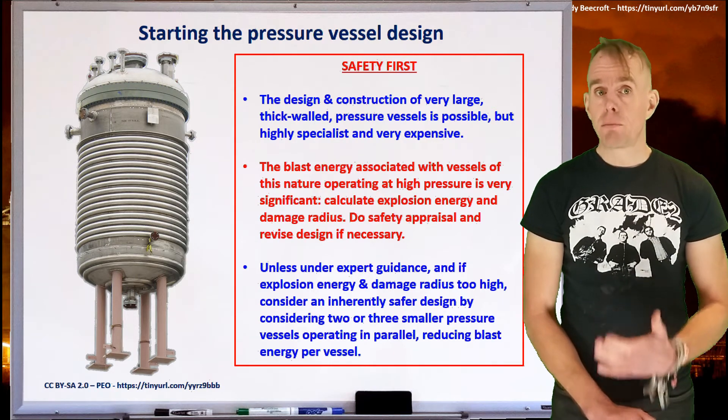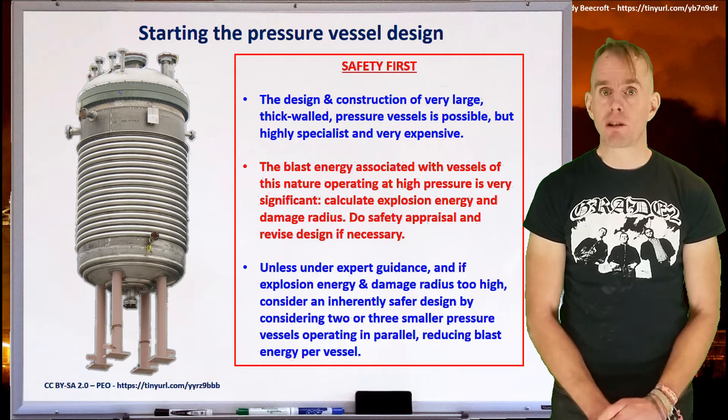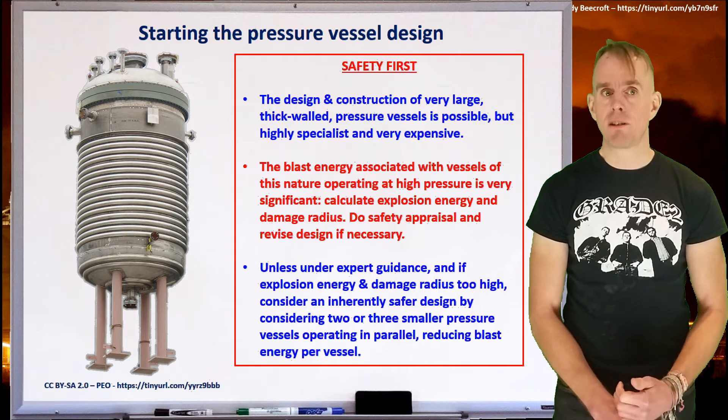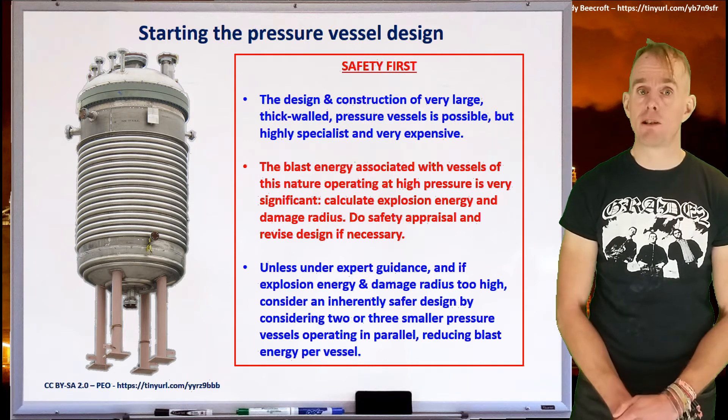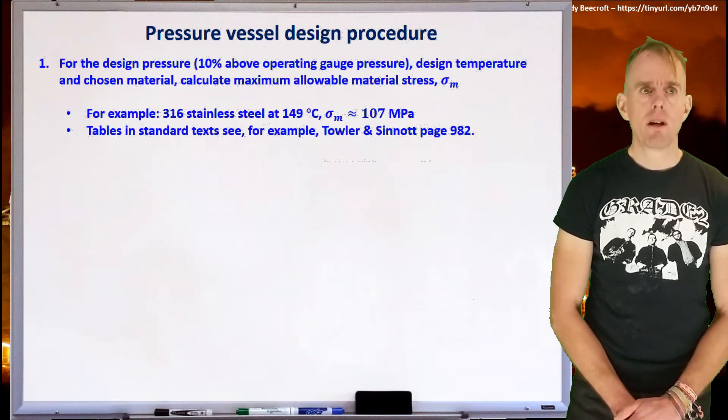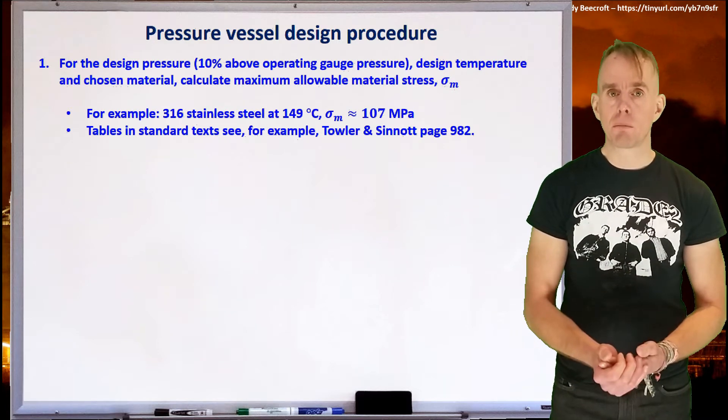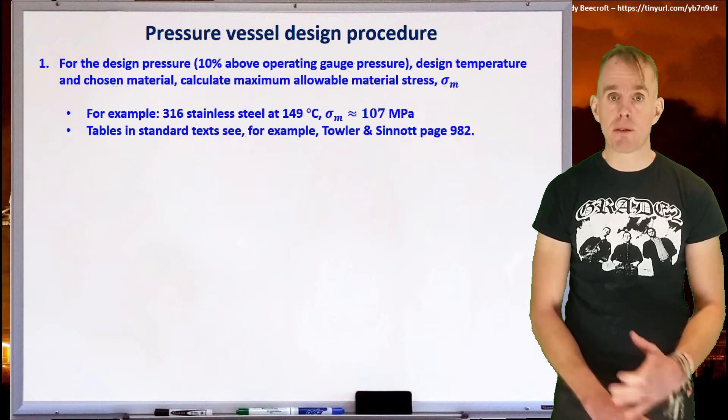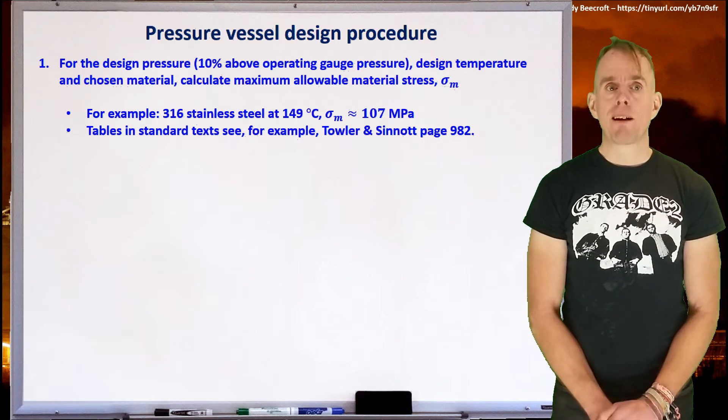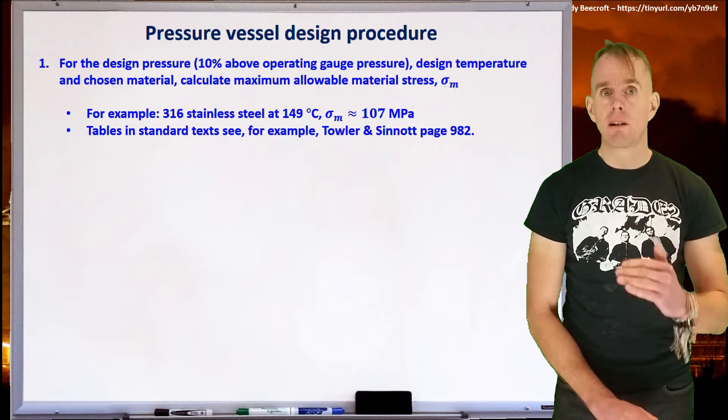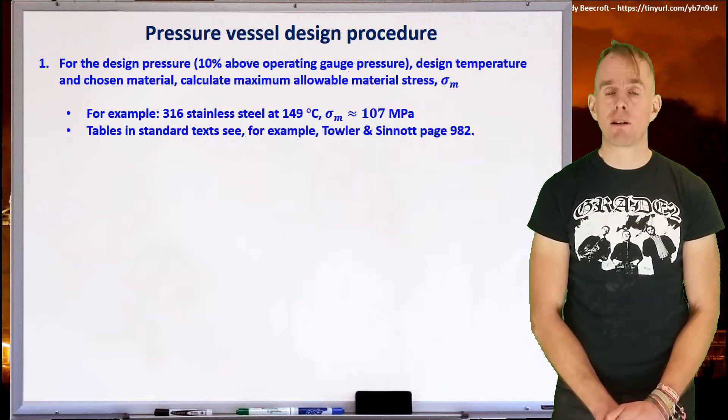So, unless you're under expert guidance, and if the explosion energy and the damage radii resulting from an explosion is just simply too high, consider an inherently safer design by specifying two or three smaller reactors in parallel and reduce blast energy. Let's think about a pressure vessel design procedure. Let's assume that our pressure vessel blast energy is acceptable. What we next need to figure out is how thick the walls are and whether they can actually be welded. If you look in the excellent book by Towler and Sinnott, you will find there are vessel design procedures, and this is an excerpt from one of those, and I'll make reference to Towler and Sinnott where appropriate.